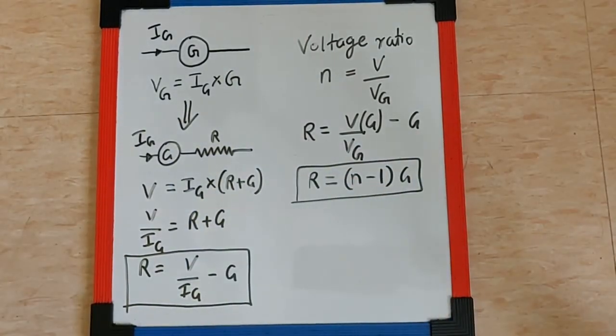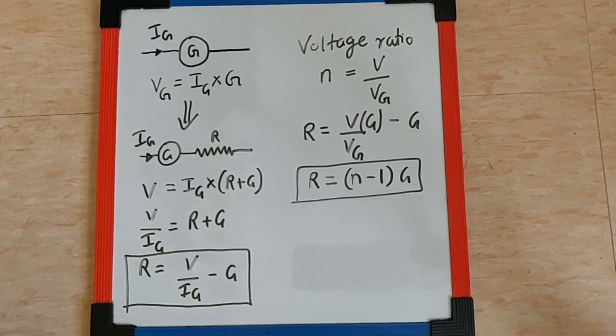So this becomes another formula which we can use to find the value of resistance in series required to convert a galvanometer into voltmeter.